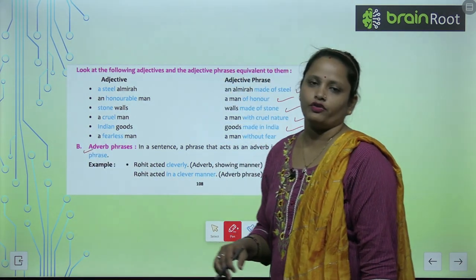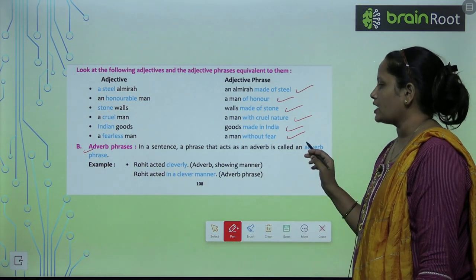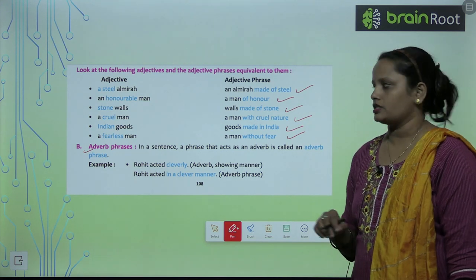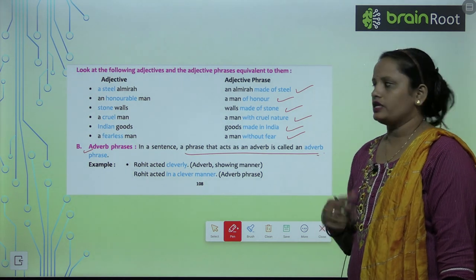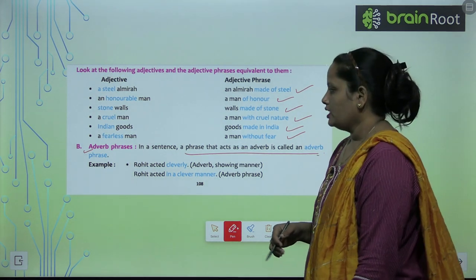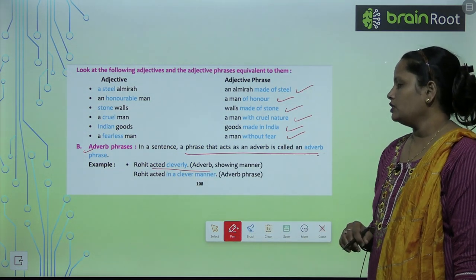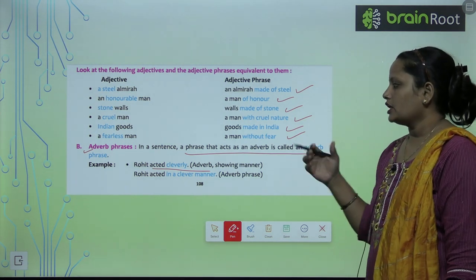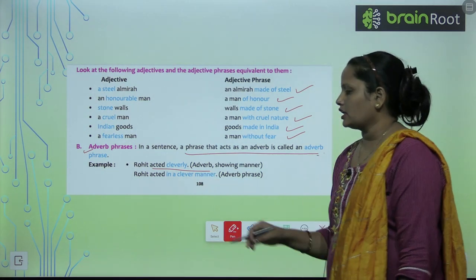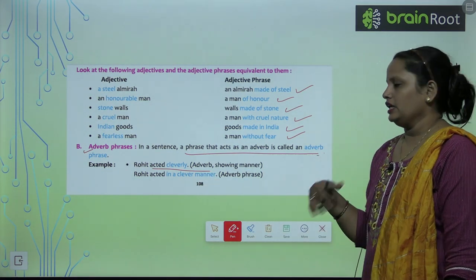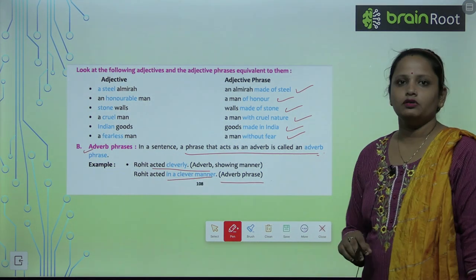Next comes adverb phrases — ab hum adverb phrases ke baare mein padhenge. In a sentence, a phrase that acts as an adverb is called an adverb phrase — kisi bhi sentence mein jo phrase adverb ki tarah kaam karta hai, use adverb phrase kehte hain. Example: Rohit acted cleverly — yahan pe 'cleverly' adverb hai jo manner show kar raha hai. Rohit acted in a clever manner — 'in a clever manner' ho jaega adverb phrase.